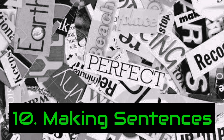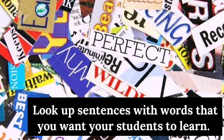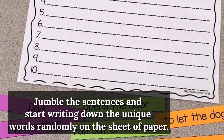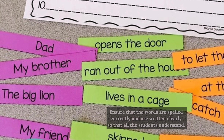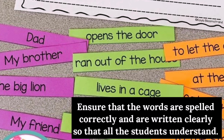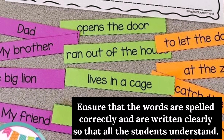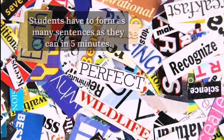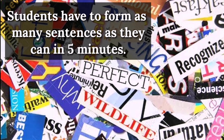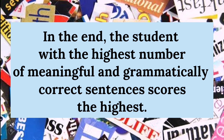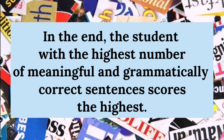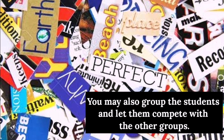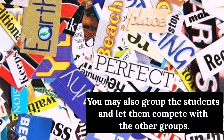Number 10: Making Sentences. Look up sentences with words that you want your students to learn. Jumble the sentences and start writing down the unique words randomly on a sheet of paper. Ensure that the words are spelled correctly and written clearly so that all students understand. Give your students a pen and blank paper. Students have to form as many sentences as they can in five minutes. In the end, the student with the highest number of meaningful and grammatically correct sentences scores the highest. You may also group the students and let them compete with other groups.